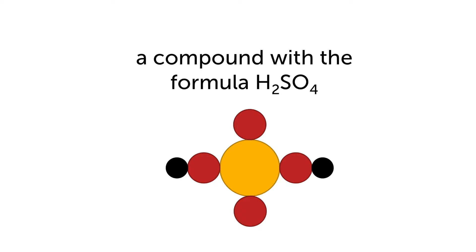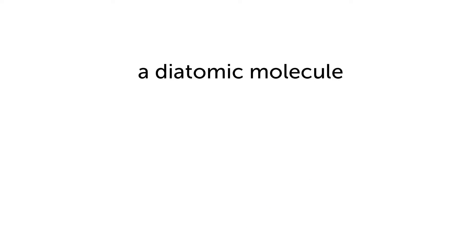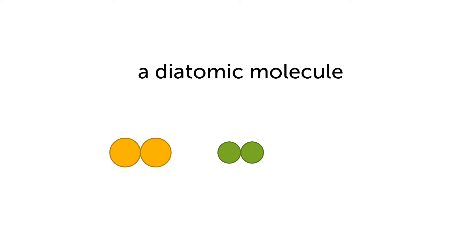Can you guess from the diagram what the different colored circles represent? Which elements do they represent? Now we'll look at a different term — a diatomic molecule. A molecule is formed when two or more atoms combine together; they can be the same or different kinds. When you have two atoms that are combined we call it diatomic. Here are two diatomic molecules each representing a type of element. On the right, this is also a diatomic molecule but it is a compound because there are two different types of atoms.